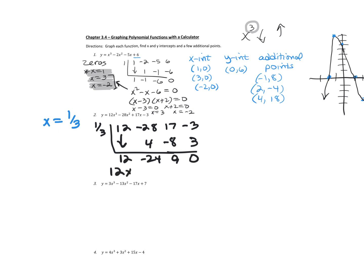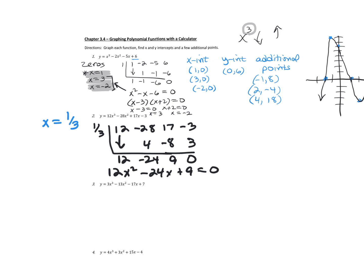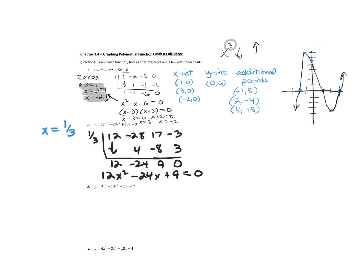This gives me 12x squared minus 24x plus nine equals zero — it's now quadratic. I can find my other two zeros by seeing if it's factorable or by using the quadratic formula. I also notice I can factor out a GCF, which will make it a little bit easier. The GCF between 12, negative 24, and nine is three, so dividing everything by the GCF gives me 4x squared minus 8x plus three. I can now try to factor this — either guess and test or factor by grouping.